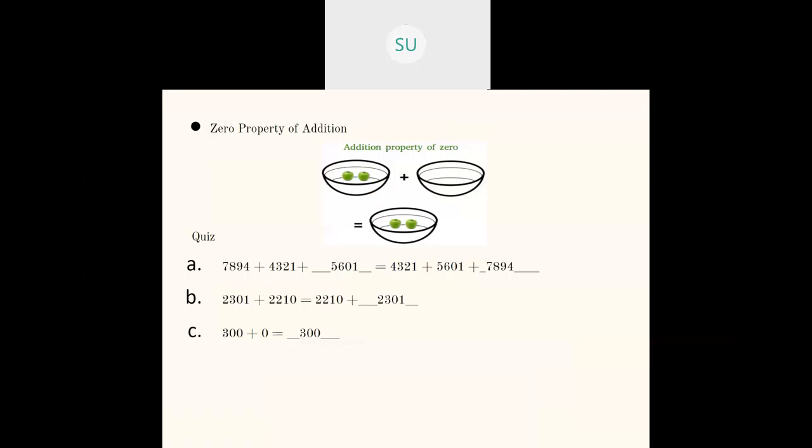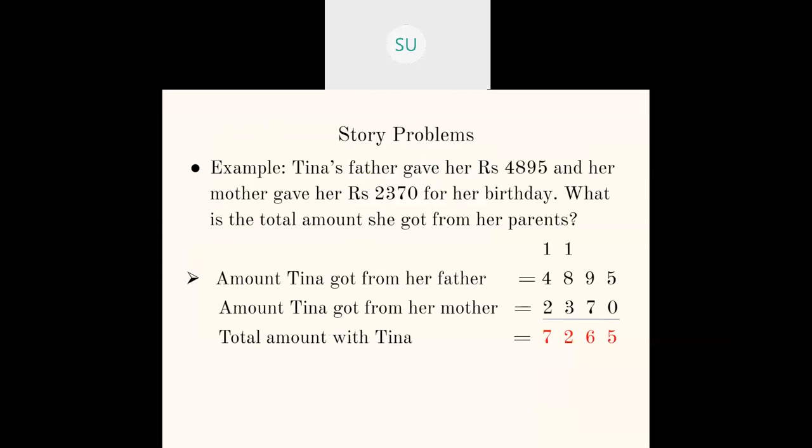Then we saw the zero property of addition. To any number you add zero, the sum will be the number itself — because zero has no value, it basically means nothing. Then we saw adding one: whenever you add one to any number, you get the successor of that number. For example, 750 plus one will be 751, which is the successor of 750. So these were the different properties of addition.